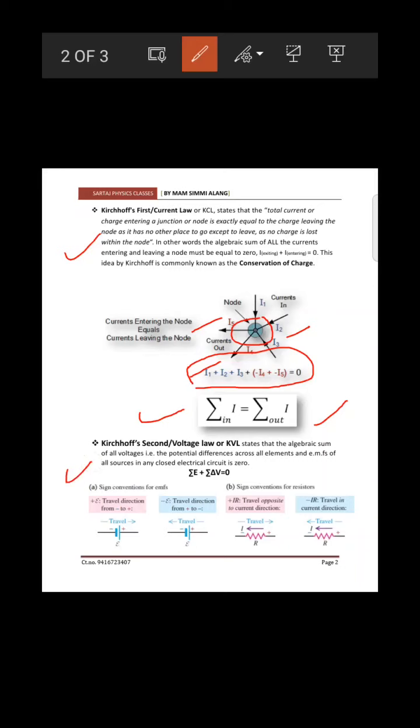Next we have Kirchhoff's Second Law — Kirchhoff's Voltage Law, also called KVL. According to this law, the algebraic sum of all voltages (potential differences) across all resistance components, and the EMFs of all cells in that circuit, will be equal to zero.